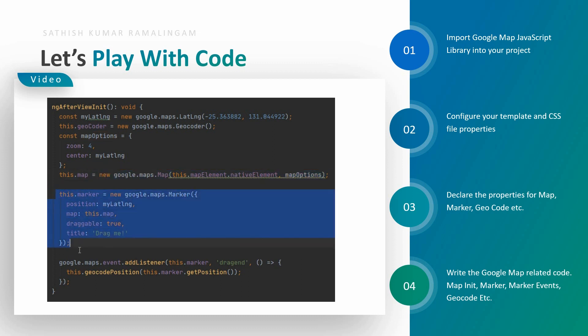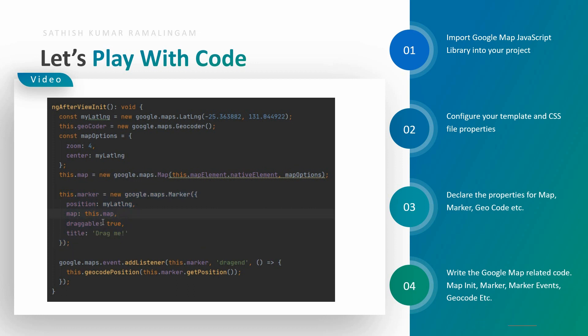Next, this code will help to create a marker inside your Google Map. Here I declare the marker position and also the map. The marker is draggable — that is a very important property. Don't forget to include this; I want the marker to be draggable.